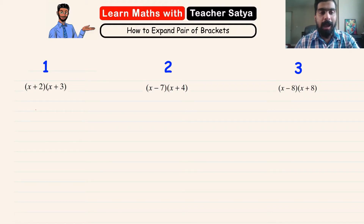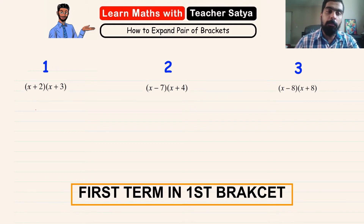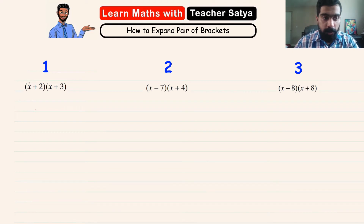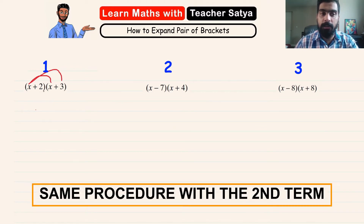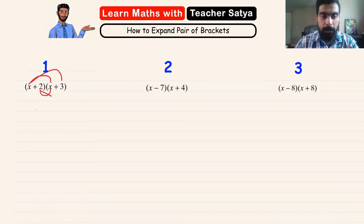When we have a pair of brackets, we take the first term in the first bracket and multiply it with both terms in the second bracket — so the first term multiplied by the first term, and the first term multiplied by the second term. Once done, we do the same with the second term.